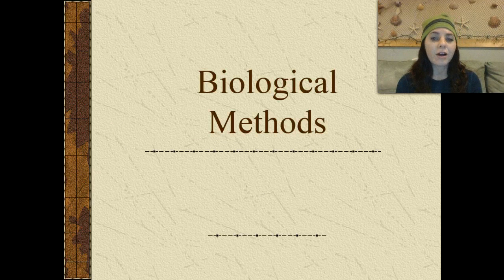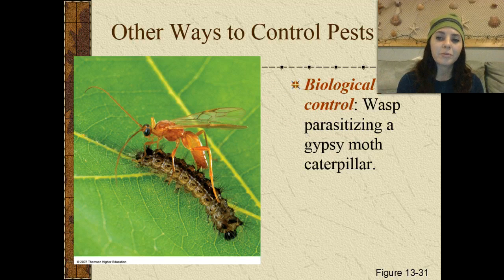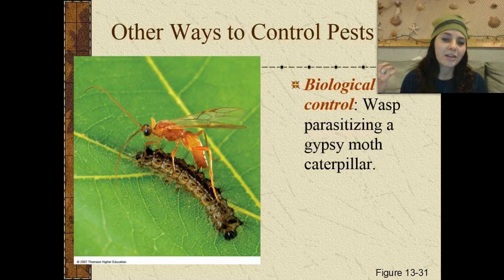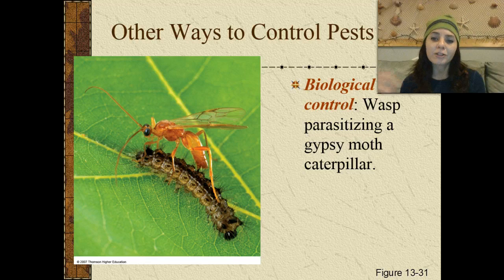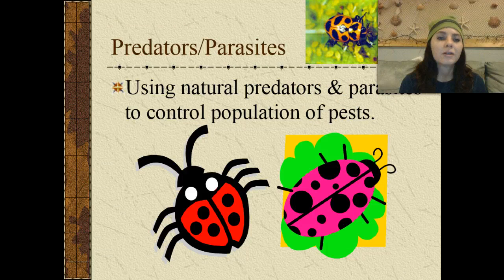So there are also biological methods — other ways to control pests. An example of biological pest control would be a wasp parasitizing a gypsy moth caterpillar. Basically, we're going to employ the use of the pests' natural predators. We might bring in a bunch of wasps to parasitize gypsy moths which are destroying our crops, using natural predators or parasites to control the population of pests.